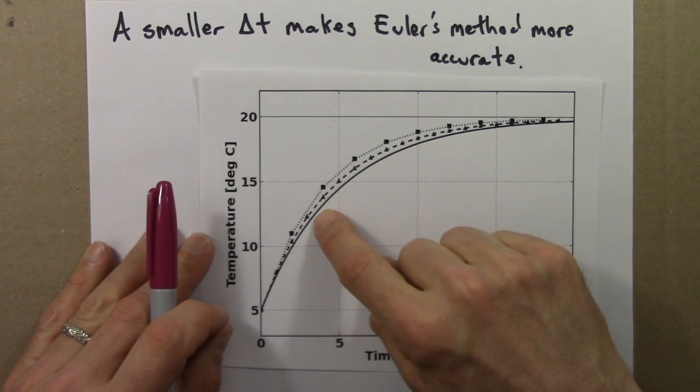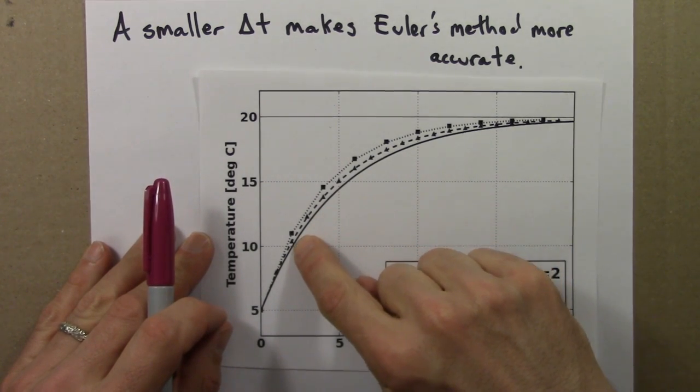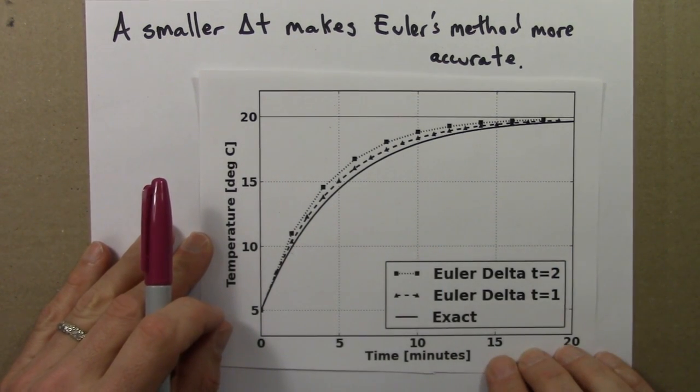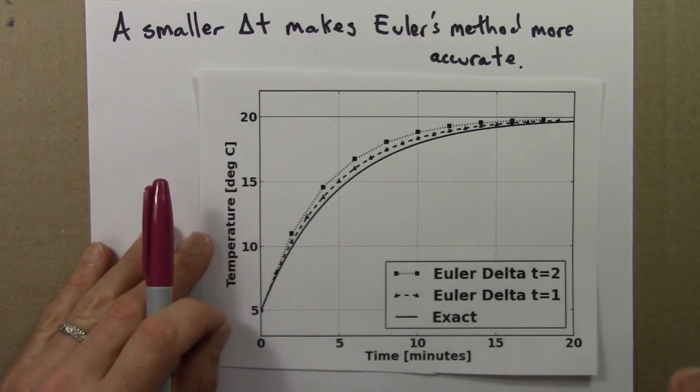It's closer because the ignoring of the problem is a less bad thing to do. We're pretending now that a continually changing rate is only constant for 1 minute instead of 2, so it's not as much of a lie.